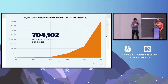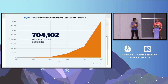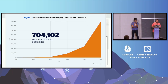It's not getting better — it's continually getting worse. From the Sonatype state of supply chain security report, this chart shows the number of malicious packages discovered. There were just a couple more in 2024 than 2023, which is many times more than 2021.